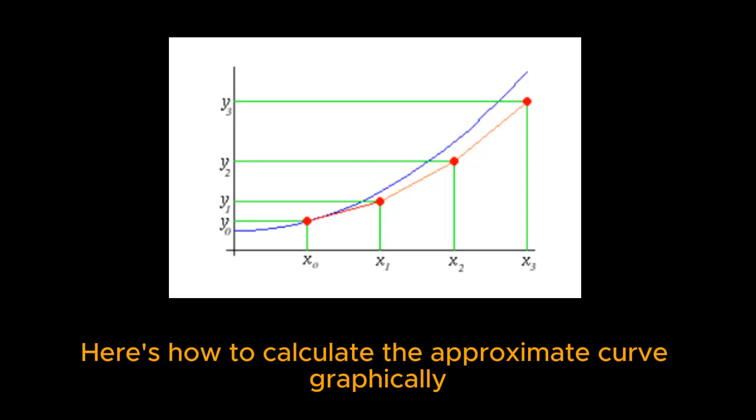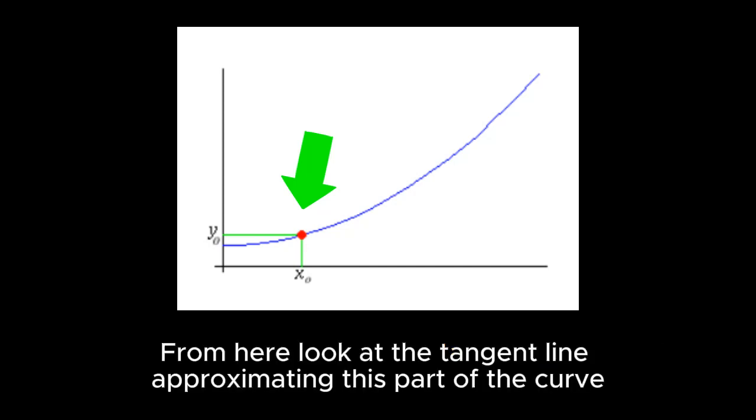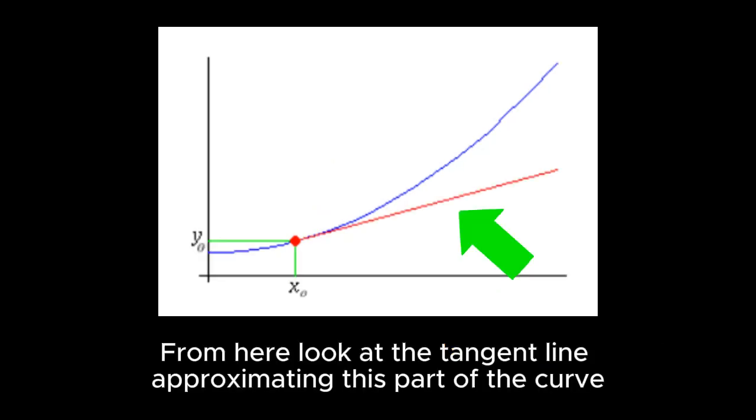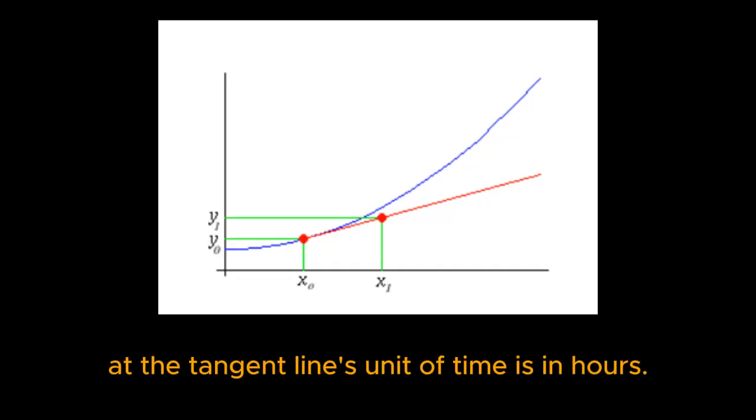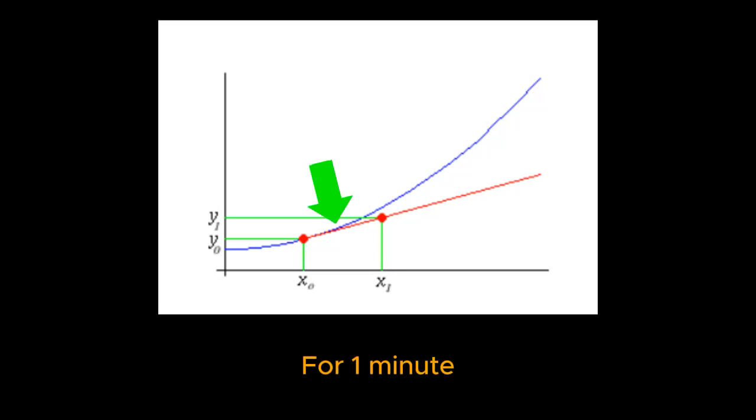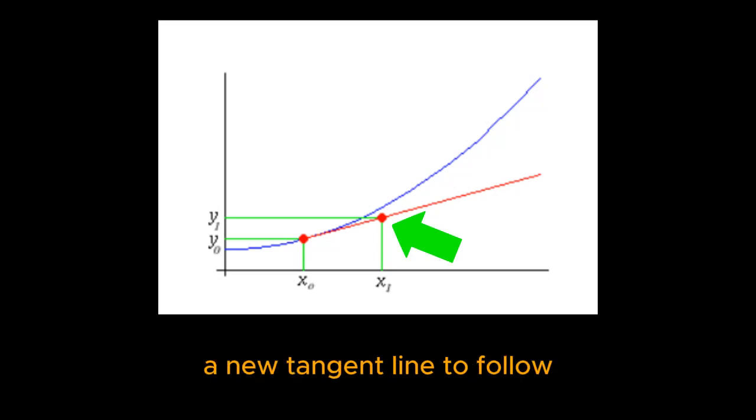Here's how to calculate the approximate curve graphically. You first start by picking a starting point on the curve. From here, look at the tangent line approximating this part of the curve. We will follow this for a very short part of that unit of time. Let's say one minute if the tangent line's unit of time is in hours. For one minute, we shall follow the tangent line, then stop. This will give us a new point, and as a result, a new tangent line to follow.